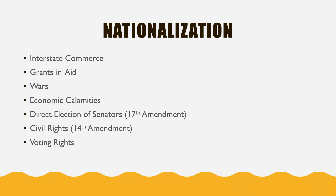This wasn't always the case — the national government was not always so much more powerful than the state governments. Originally, the state governments were more powerful than the national government. Part of this is because of our understanding of the way of life today versus the way of life in the 18th century. When the US government was originally created, most people lived most of their life engaging in commerce on a local level. So if a person who lived down the street made the harnesses for your horses, that doesn't cause the US government to get involved at all.